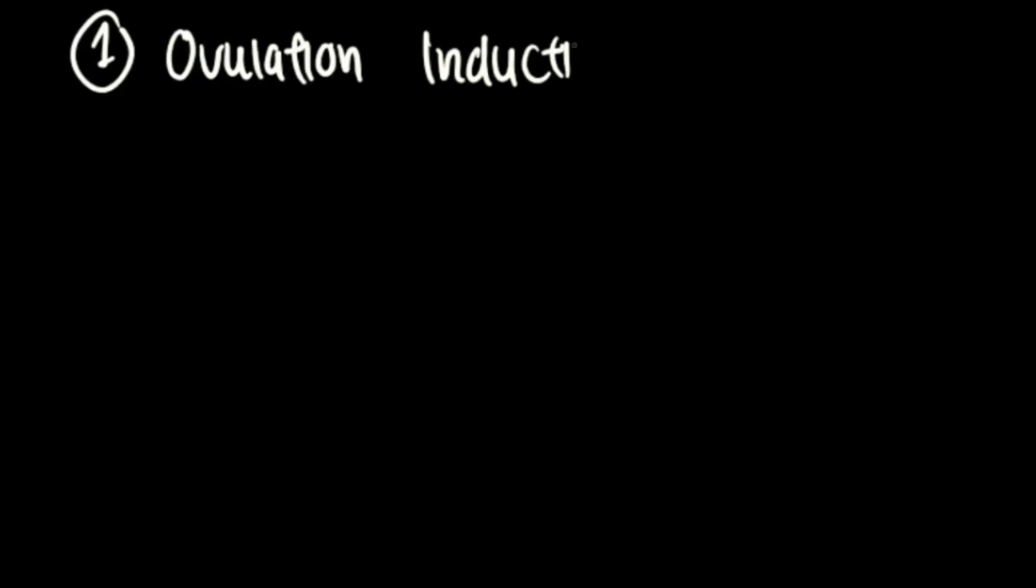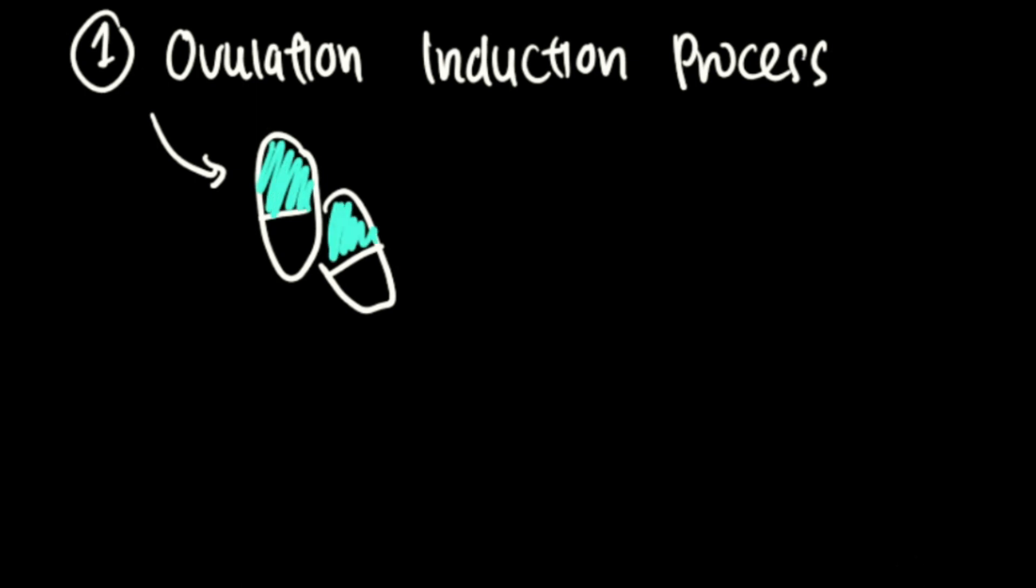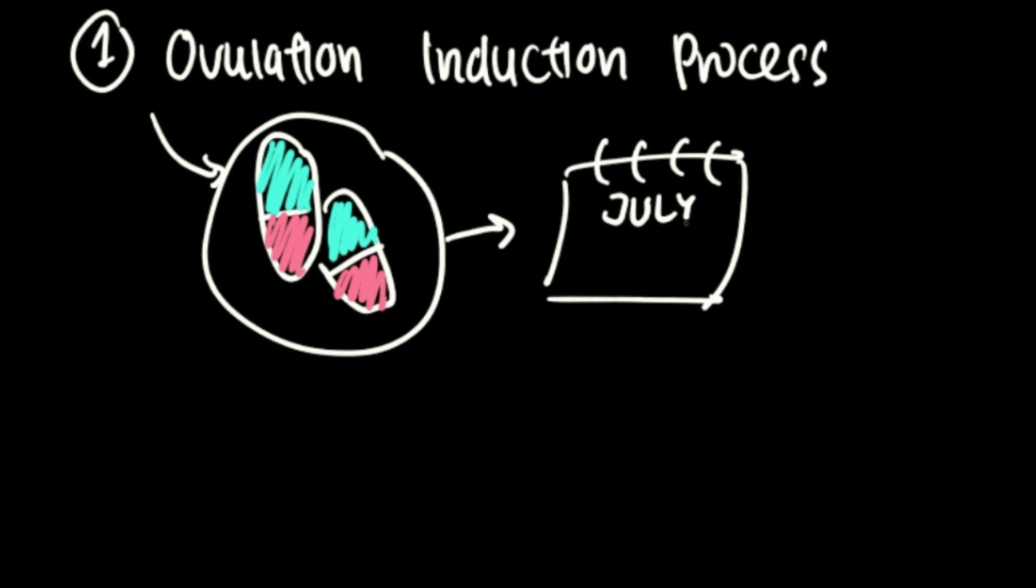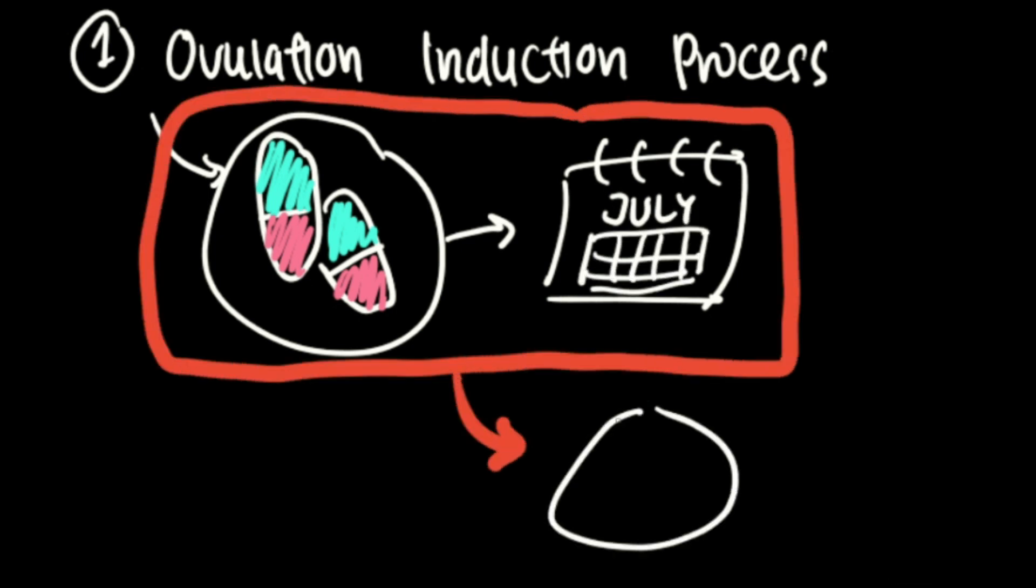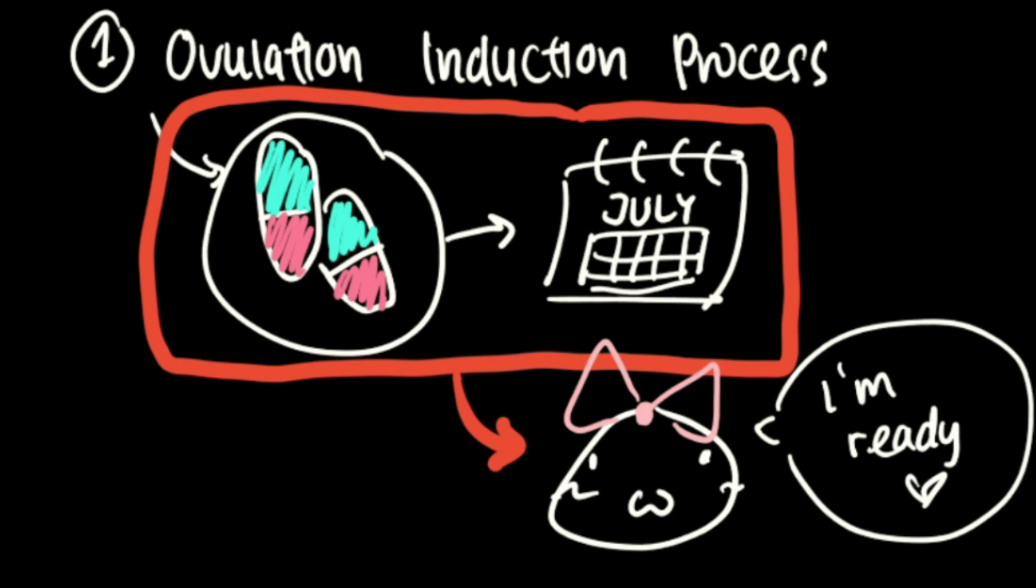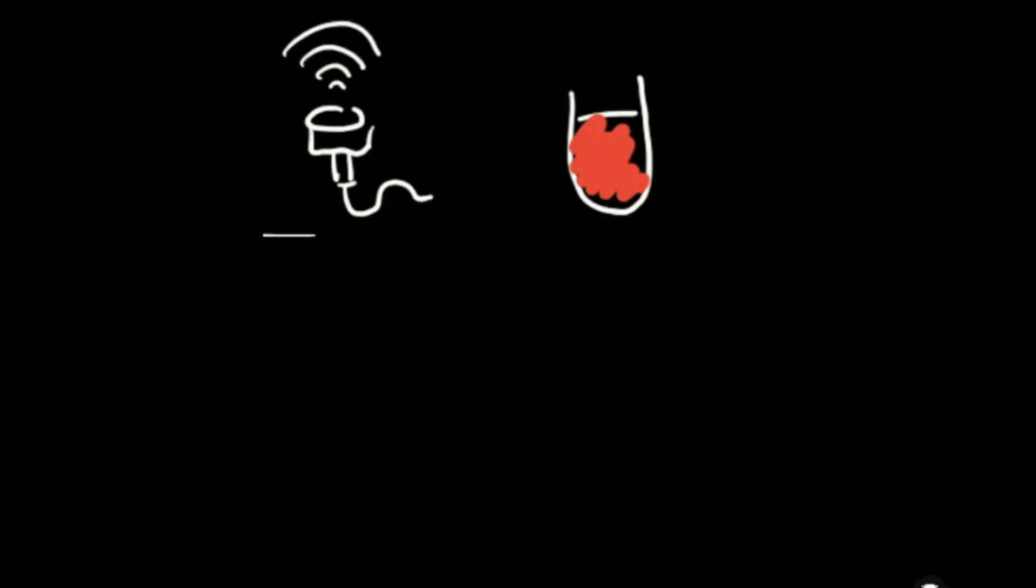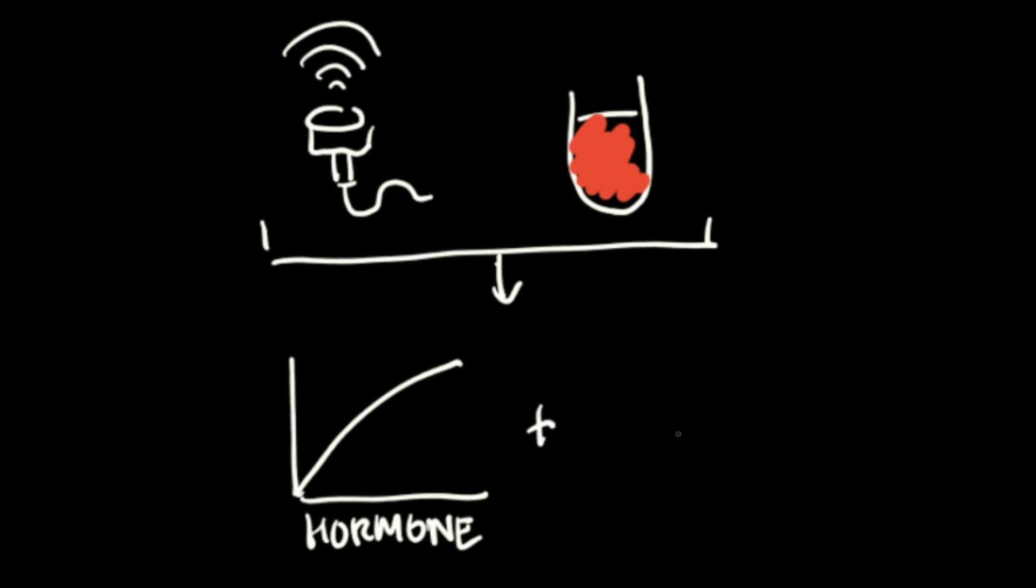There are several steps in in vitro fertilization. The first step is the ovulation induction process. In this process, fertility medication is taken for several months to mature the woman's egg and make sure it is ready for maturation. Regular ultrasounds or blood tests are performed in this process to measure the hormone levels and track the egg production.